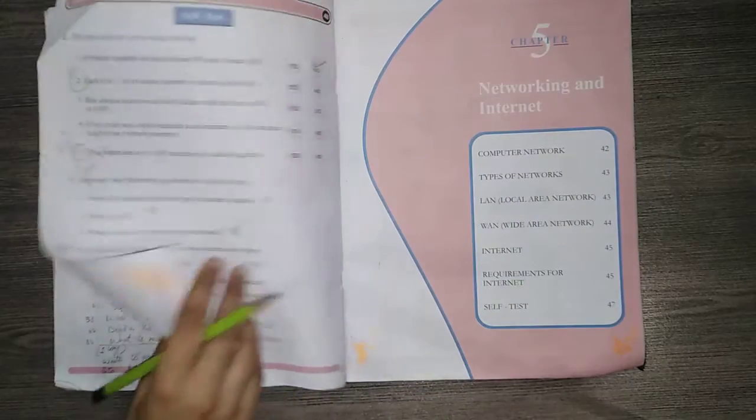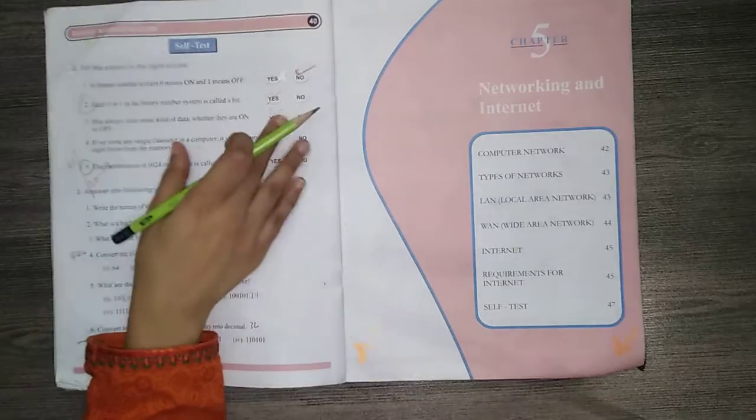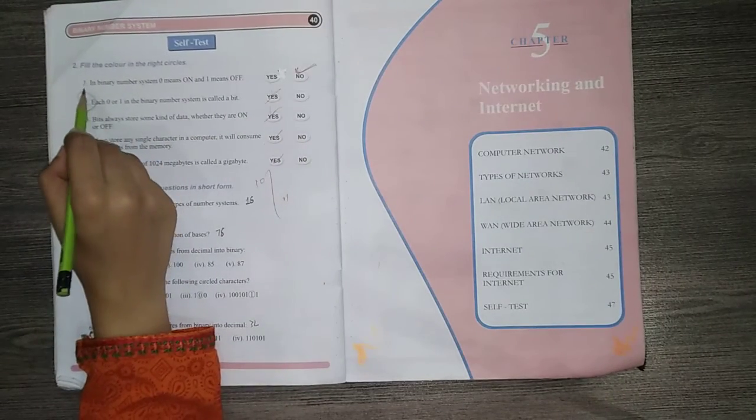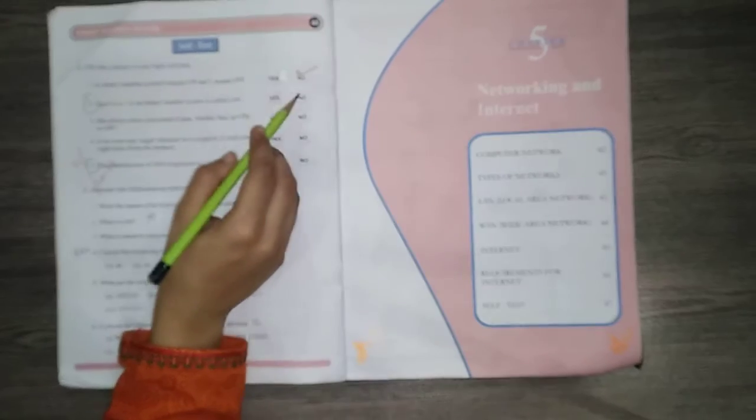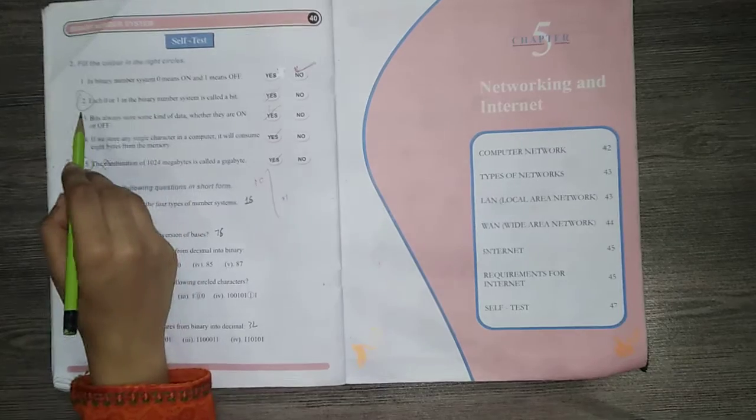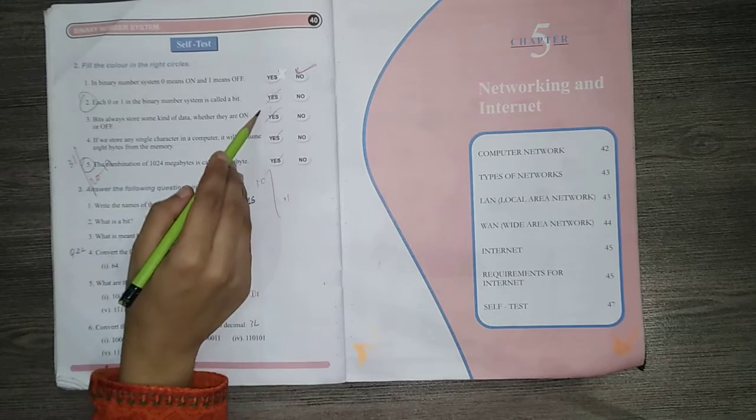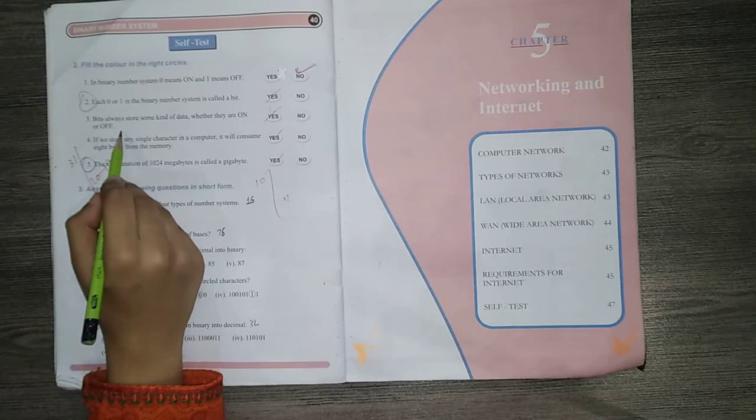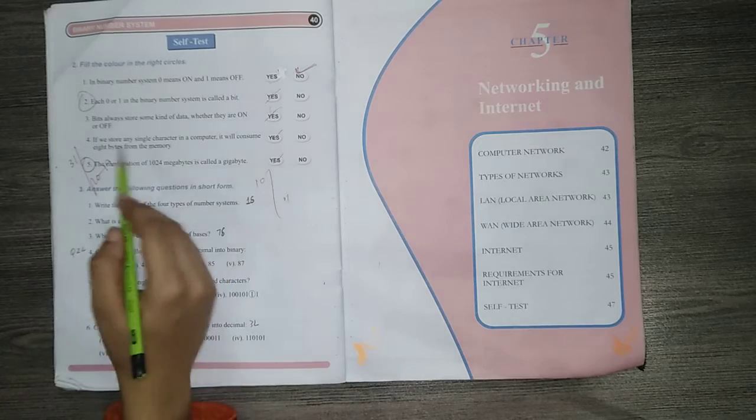Next page number 14, fill the color in the right circle. Number 1, in binary number system, 0 means off and 1 means on. So no, 0 means off and 1 means on. Number 2, each 0 and 1 in binary number system is called a bit. Yes. Number 3, bits always store some kind of data whether they are on or off. Yes.